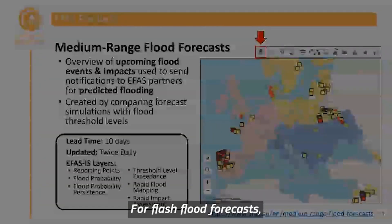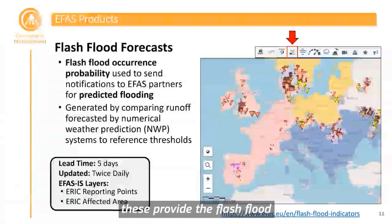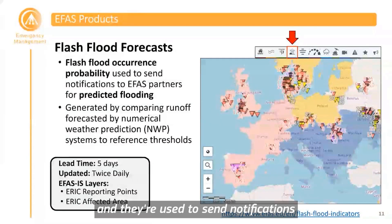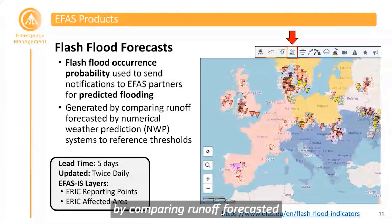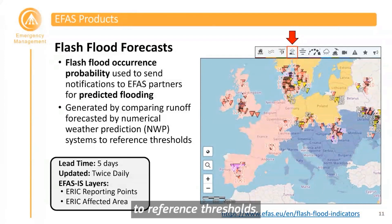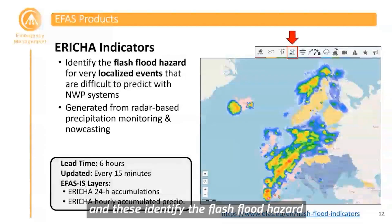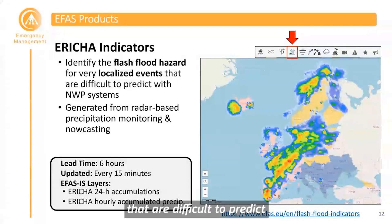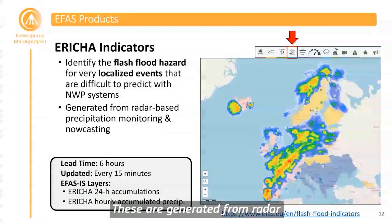For flash flood forecasts, these provide the flash flood occurrence probability and are used to send notifications to EFAS partners for predicted flooding. These are generated by comparing runoff forecasted by numerical weather prediction systems to reference thresholds. We also have the ARICA indicators for flash flooding, which identify the flash flood hazard for very localized events that are difficult to predict with other numerical weather prediction systems. These are generated from radar-based precipitation monitoring and nowcasting.